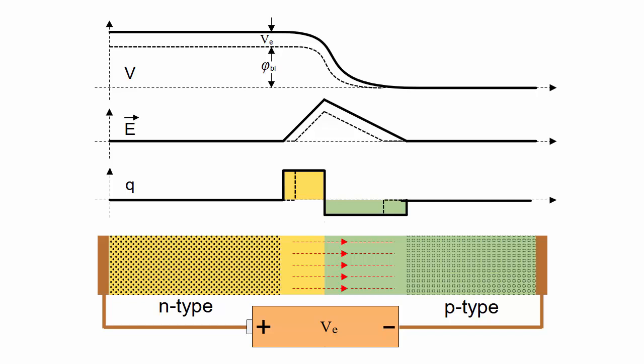The p-n junction is a semiconductor structure in diodes, transistors, solar cells, and LEDs.